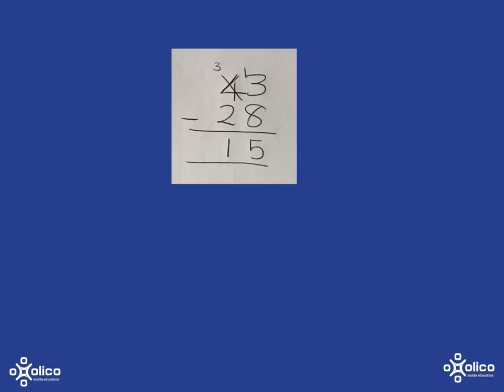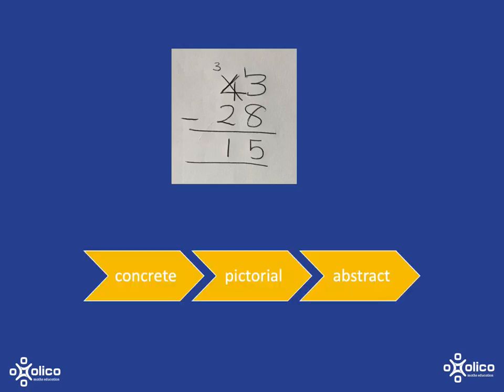So what we want to do is build slowly towards this abstract way of doing it so that they actually build up an understanding of how and why it works like that. We're going to go through that process we've been talking about over and over, which is we'll start with the concrete, then move to the pictorial, and once learners are comfortable with that, we'll start to introduce the abstract way of doing it.